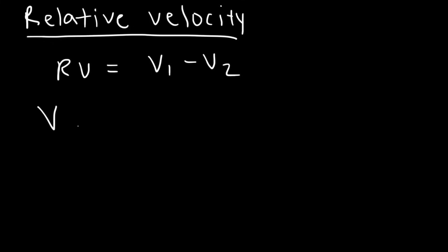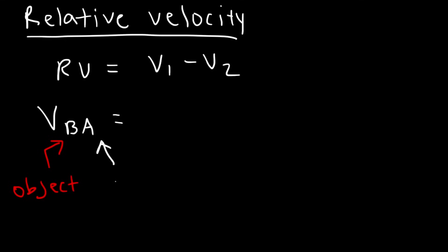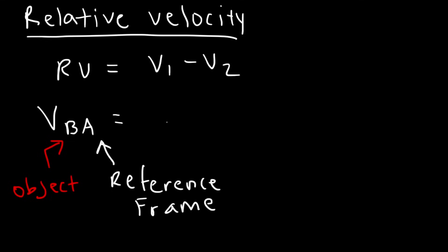So if we have the variable vba, you need to understand what this means. What this means is you're talking about the velocity of object b with respect to object a. So b is the object that you're considering — that's the object in focus. a is the reference frame, or the frame of reference. So vba is the velocity of b with respect to a, and it's basically the difference between vb and va.